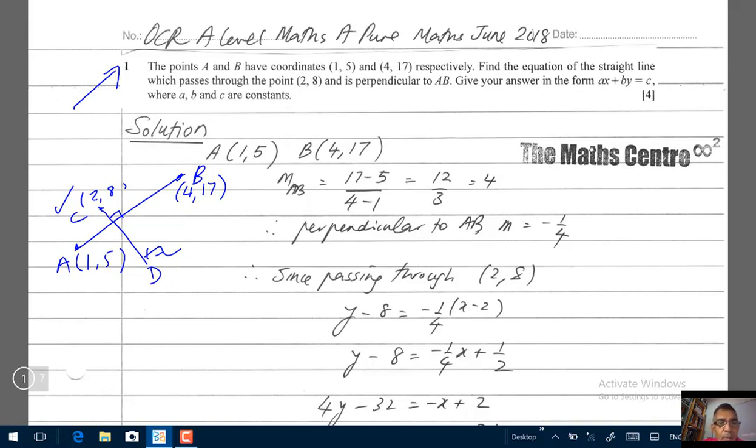So let's find the gradient of AB. We'll use the formula Y2 minus Y1 over X2 minus X1. So the gradient of AB, I use the notation M sub AB. So 17 minus 5 over 4 minus 1, which will be 12 over 3, you'll get 4.